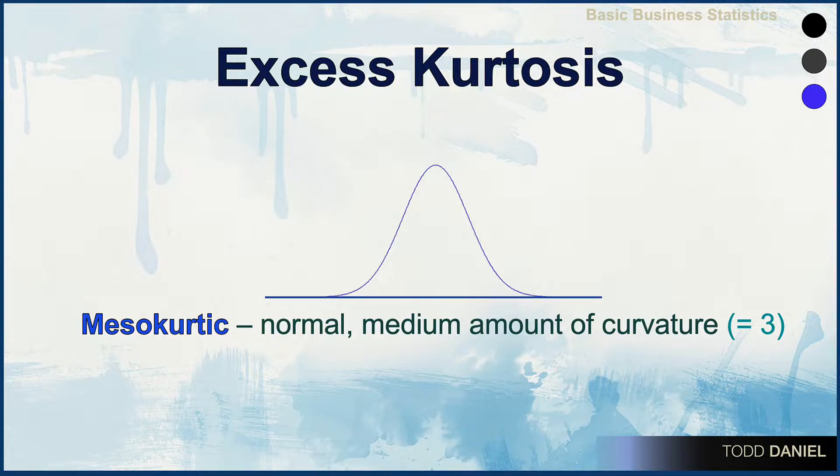This is a normal curve. It has a medium amount of kurtosis, so we would describe it as mesokurtic. Mesokurtosis is a property of normal curves. The measure of its kurtosis is three.